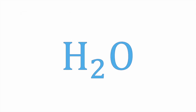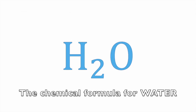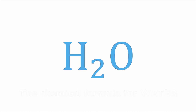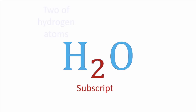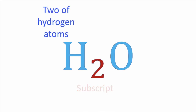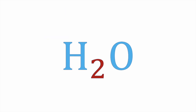For example, H2O is the chemical formula for water. It consists of the chemical symbol for hydrogen and the chemical symbol for oxygen. The subscript 2 tells us that there are two hydrogen atoms in the compound.